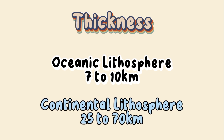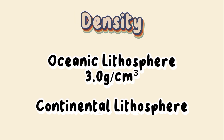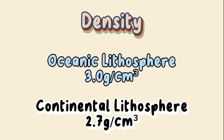Number two: density. A continental plate has an average density of 2.7 grams per cubic centimeter, while the oceanic plate has an average density of 3.0 grams per cubic centimeter.